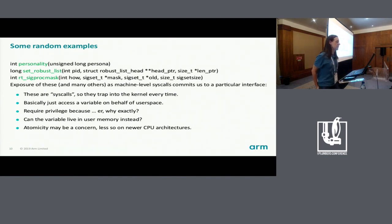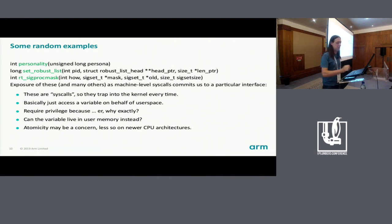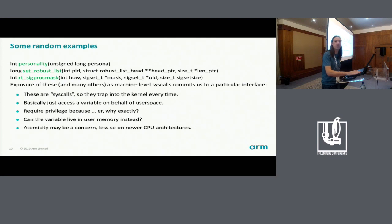To give some simple examples of odd cases, there are calls like personality and set_robust_lists which really do nothing more than access a variable on behalf of user space. Some signal-related syscalls also don't do much more than that, though they can be a little more involved. The impact of exposing these in the syscall ABI is that we have an inevitable trap into the kernel every time we call them. Do they really require privilege? If they're just accessing a variable on behalf of user space, can we just put that variable in user memory instead? Newer architectures provide ways of ensuring atomicity that didn't necessarily exist when these interfaces were invented, so things that couldn't have executed in user space originally might be more feasible to do now.